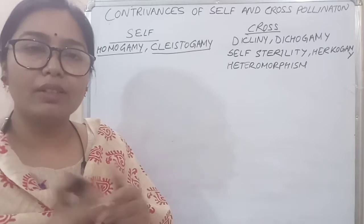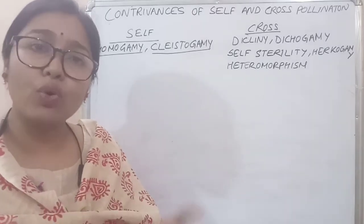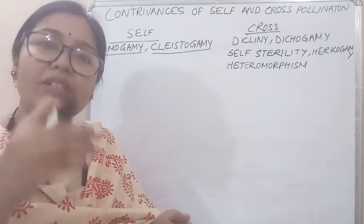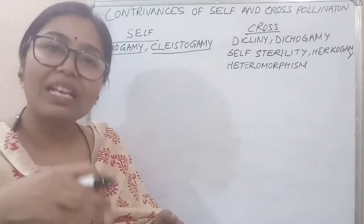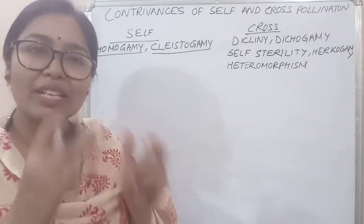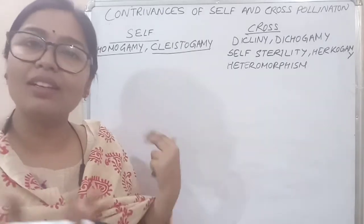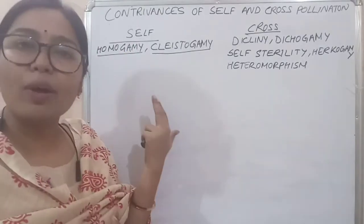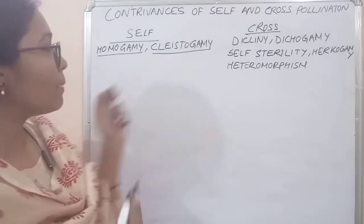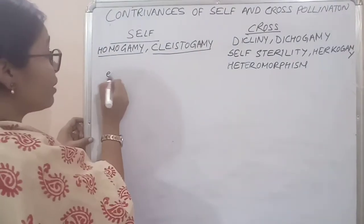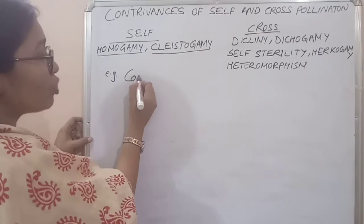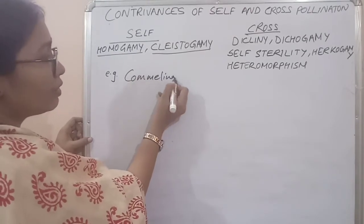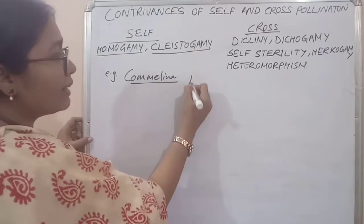If any flower never opens, how will any agent put another pollen into the stigma of the gynoecium? So cleistogamy favors self-pollination, and homogamy also does. In cleistogamy, there is a famous example — Commelina benghalensis.